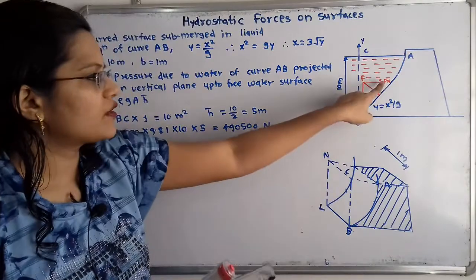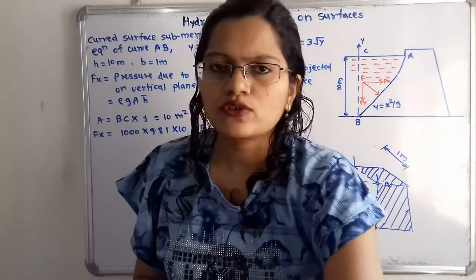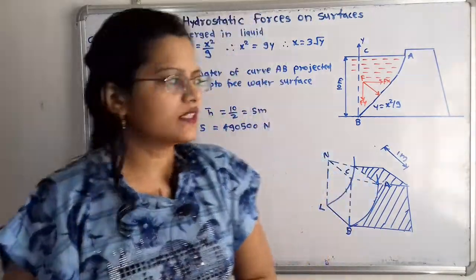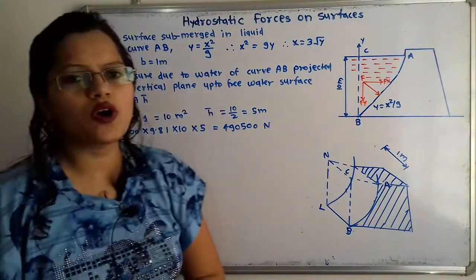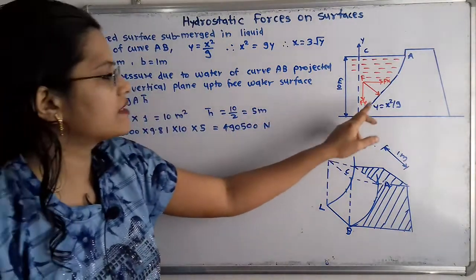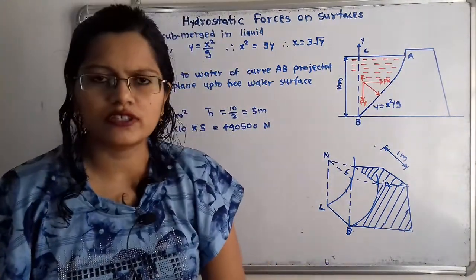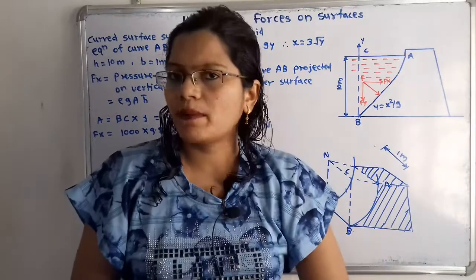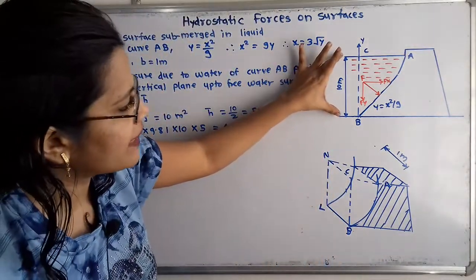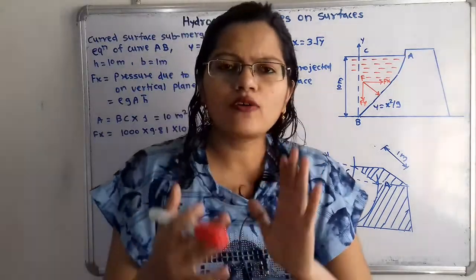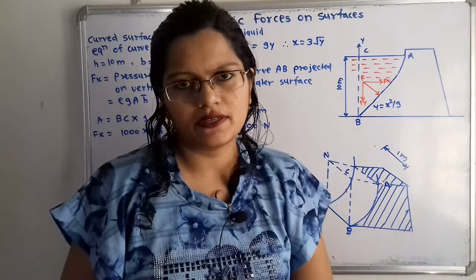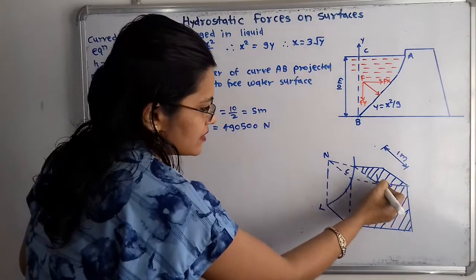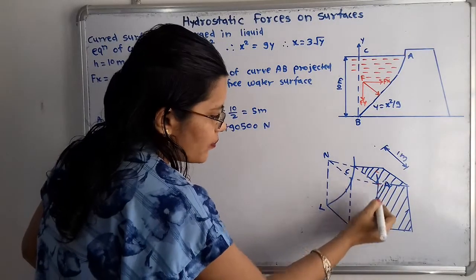First we find the value of Fx. Fx is the pressure due to water on curve AB projected on a vertical plane up to the free surface of water. The free surface of water is at height = 10 meters. To project curve AB onto the vertical plane, here is a three-dimensional diagram showing the dam structure with points A and B.